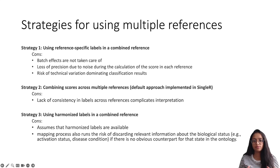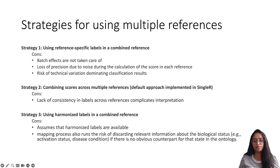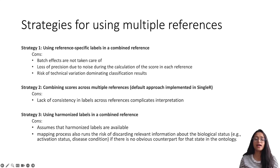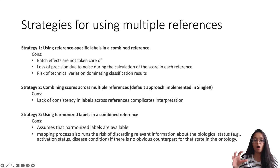The next strategy involves combining scores across multiple references. This involves performing classification separately with each reference and then combining the results to choose the label with the highest score across the references. The biggest advantage of this method is that it takes care of reference-specific batch effects, and it is the default method implemented in SingleR. When SingleR is provided with multiple references, the function first annotates a test dataset with each reference individually — essentially looping over individual references and running SingleR on each, comparing the test dataset with each individual reference one-on-one. For each cell, the function collects its predicted labels across all references and identifies the union of markers that are upregulated in the predicted labels across all references.